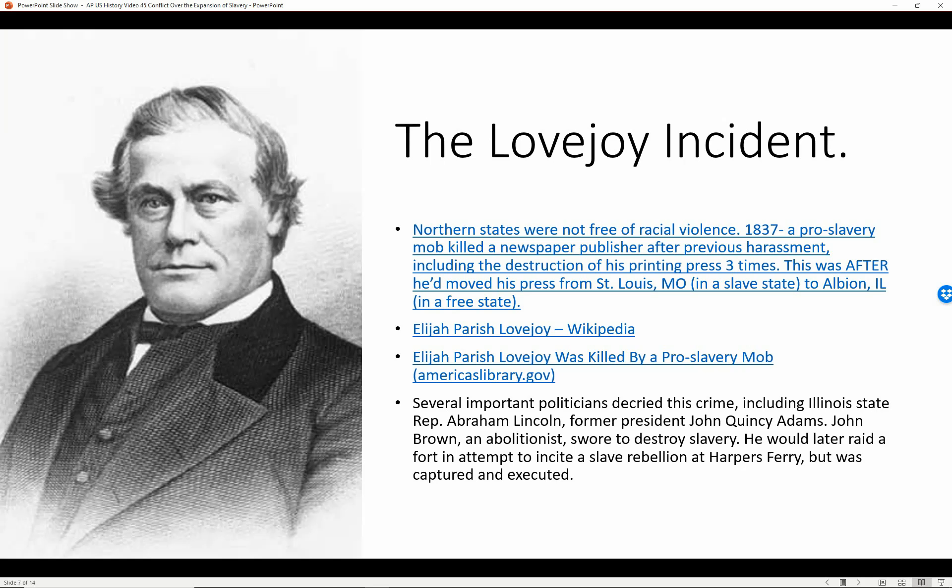The Lovejoy Incident. The northern states were not free of racial violence. In 1837, a pro-slavery mob killed a newspaper publisher after previous harassment against this publisher, Mr. Lovejoy, including the destruction of his printing press three times. This was after he had already moved his press from St. Louis, Missouri — which was a slave state at the time — to Albion, Illinois, which was a free state.